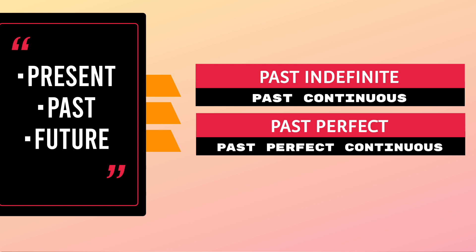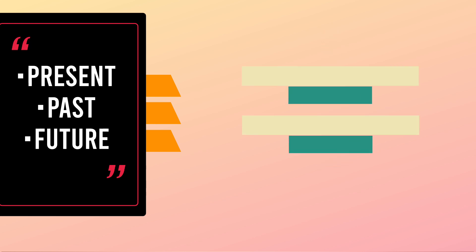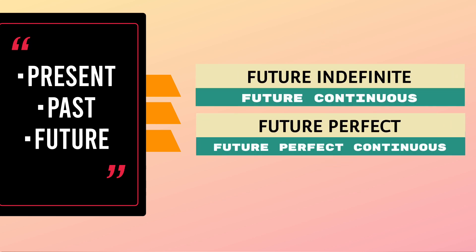In past tense we will get: past indefinite, past continuous, past perfect, and past perfect continuous. Similarly, in future tense we will get: future indefinite, future continuous, future perfect, and future perfect continuous.